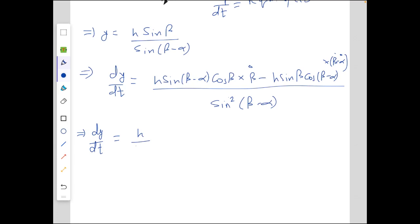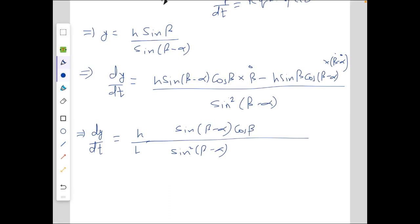We get h over L sine squared (beta minus alpha), and in the numerator we get sine of (beta minus alpha) times cos beta times v2. I have taken h and 1 by L as common.